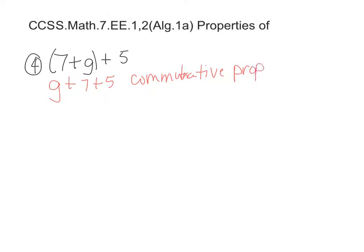It's addition because we are adding, so it's commutative property of addition. Now we are going to group these two together, and we can say g plus 12.